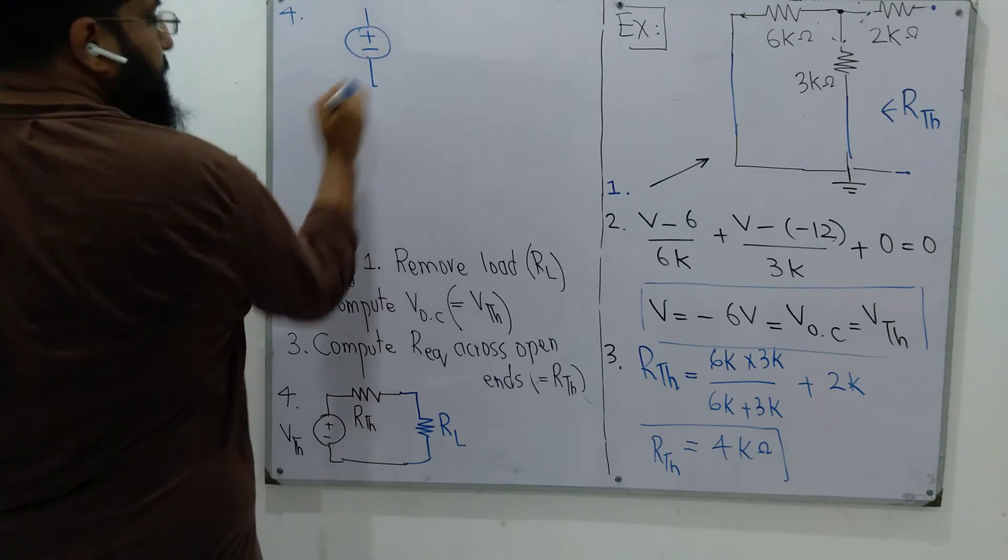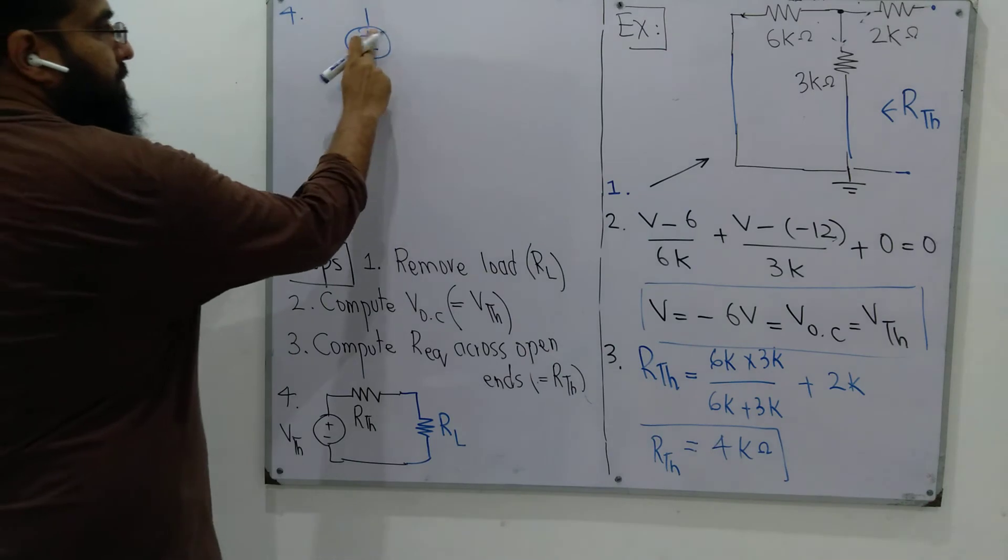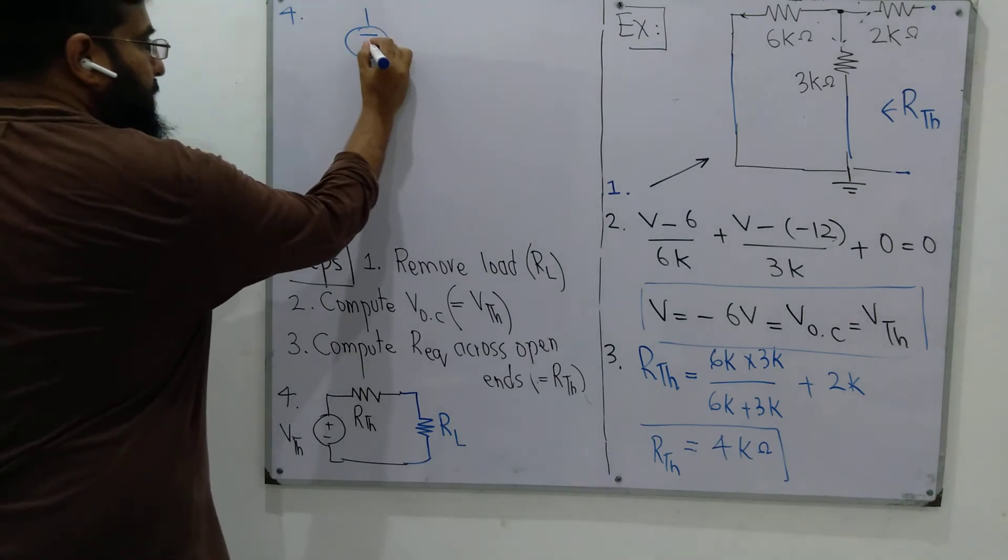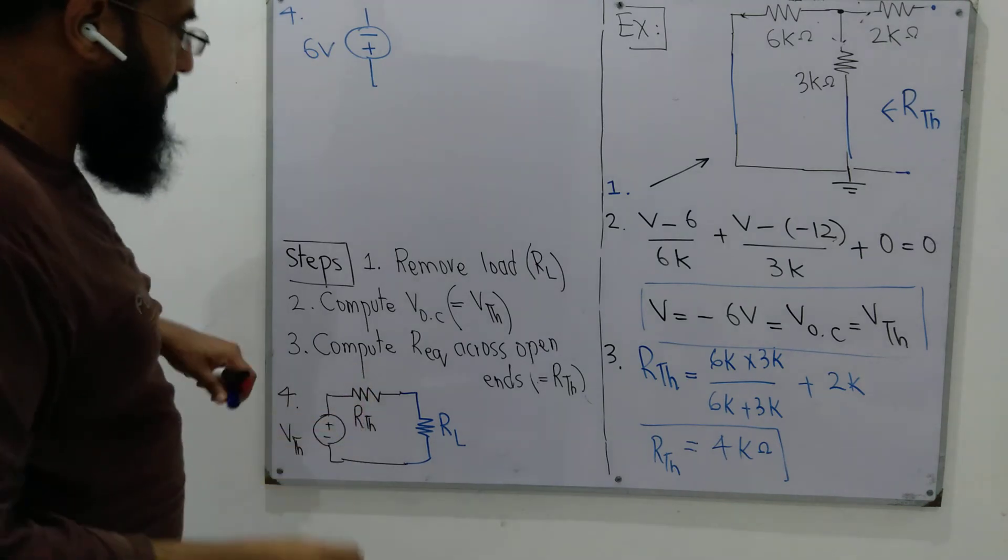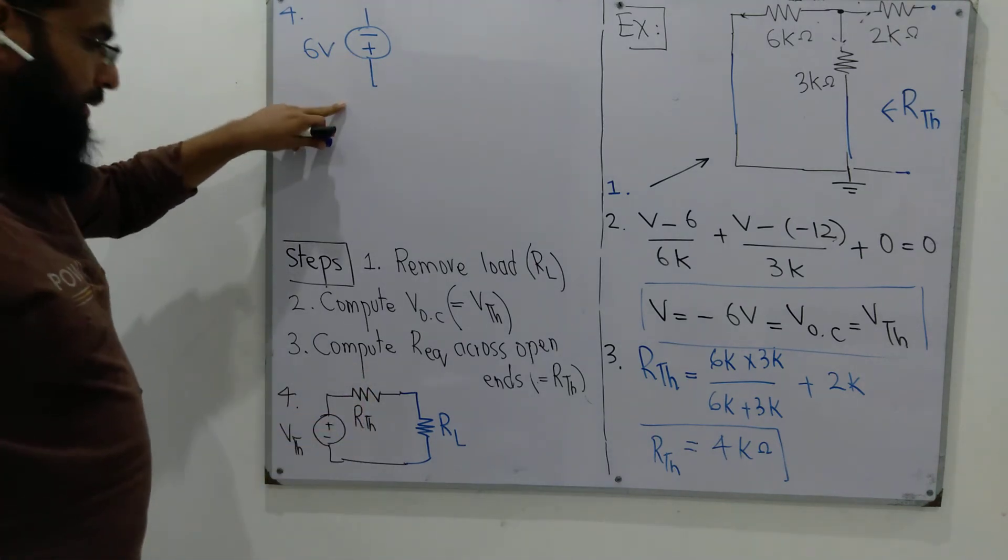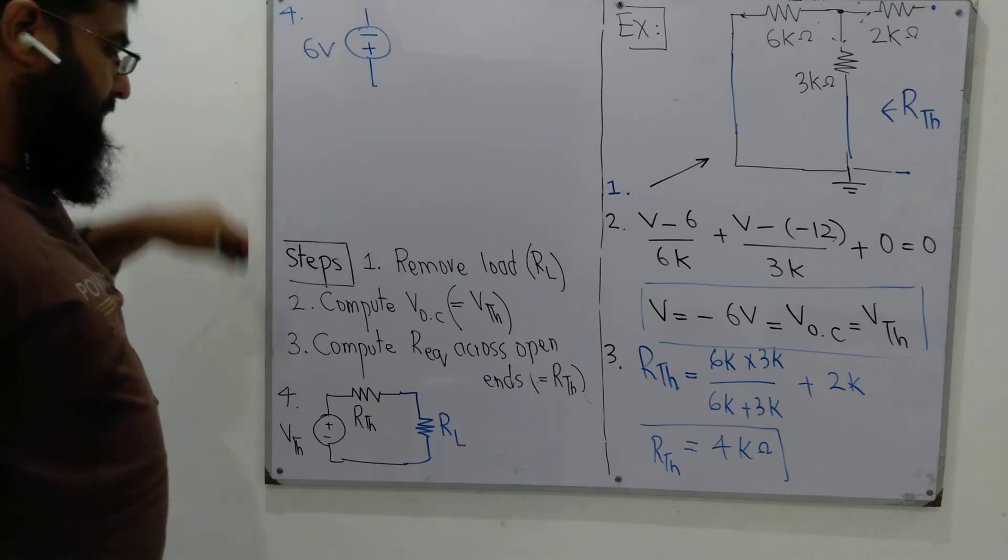Now let's go to step number 4. Since Vthevenin is minus 6 volts, minus means that the polarity will be reversed. I can reverse it, positive on the down side. The lower side will be plus, the upper side will be minus.